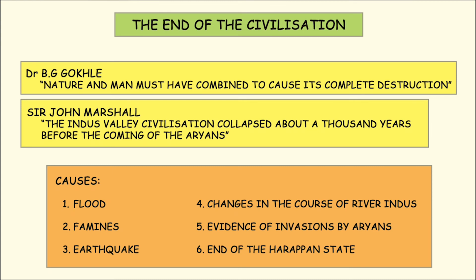The last theory put forward by some archaeologists is that the Harappan culture came to an end, and with it the civilization ended. The culture here refers to objects used by the Harappan people — such as beads, weights, stone blades, and baked bricks. When these objects slowly disappeared, even the civilization came to an end. This is evident because by the end of the Harappan civilization, seals, scripts, beads, and pottery all began to disappear, and only local objects were being found.